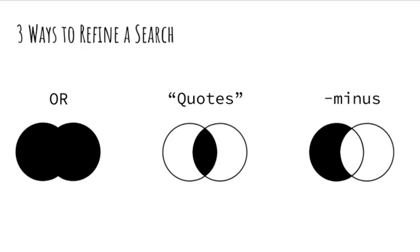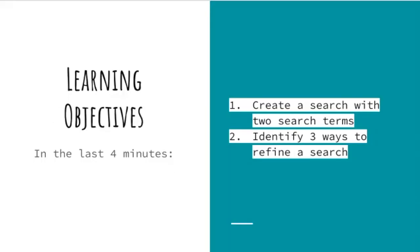Now that I have a video to watch, let's review three ways to refine a search in YouTube Kids: using OR to get lots of results that have our search terms, using quotes to get results that only have our search terms, and using the minus sign to take away some results that we don't want to see. In the last four minutes, we created a search with two search terms — cat and cars — identified three ways to refine a search: OR, quotes, and the minus sign, and we found the perfect video to watch.